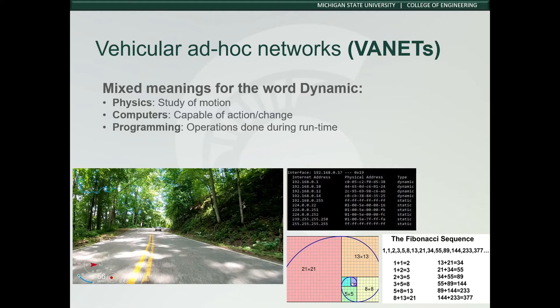In software, a dynamic programming language is one in which operations otherwise done at compile time can be done at run time. An example is optimization over recursion. If something is repeatedly requesting data for the same results, instead of recomputing the same complex problem, we can satisfy the calls by storing the results of the smaller subproblems to save time and avoid complexities which could arise in a time-sensitive system.